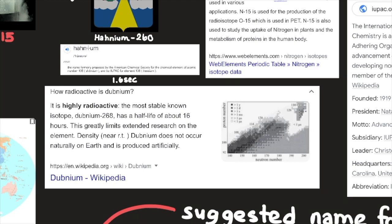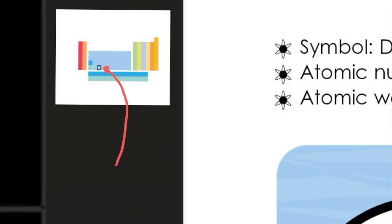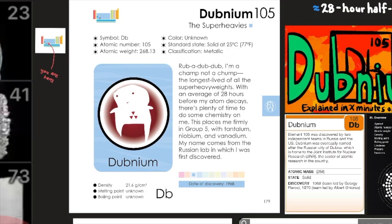Dubnium does not occur naturally on Earth and is produced artificially because of its radioactivity; radioactive elements are not common because over time they decay into other elements. For those touring the periodic table, Dubnium-105 is among the superheavies. Its symbol is Db, atomic number 105, atomic weight 268.13, color unknown. Its standard state is solid at 25 degrees Celsius (77°F), and its classification is metallic.